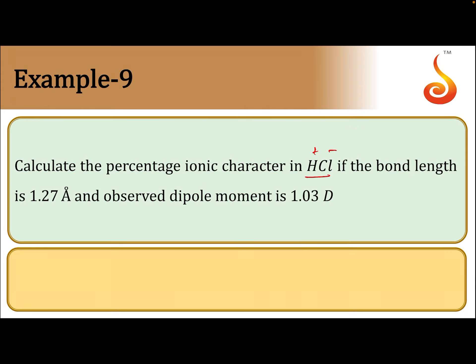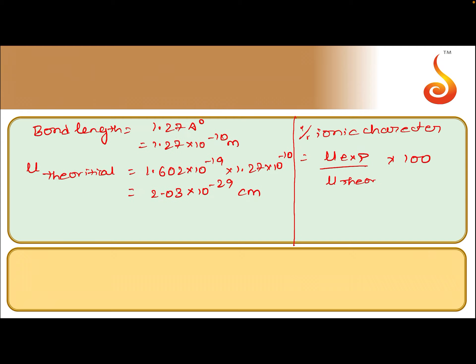But the observed value is given in Debye, so this value also should be converted to Debye. 1 Debye is equal to 3.335 into 10 to the power of minus 30 coulomb meter.